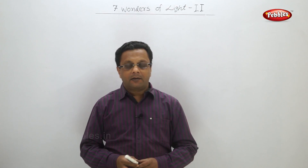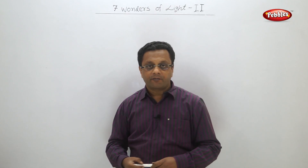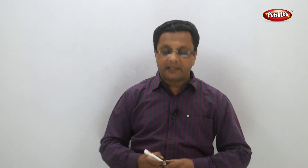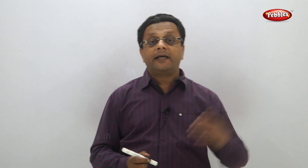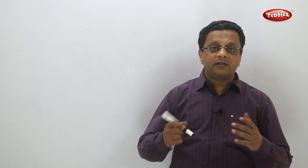Hello friends, welcome back. We are going to start chapter number seven — Wonders of Light, Part Two. According to me, this chapter should have been taken before the mirrors and lenses chapter. In chapter six we already saw reflection of light — whenever a non-transparent reflective surface is there, light incident on it reflects. In the case of lenses, light passes through and convergence or divergence happens. Now let us see why light changes its direction.